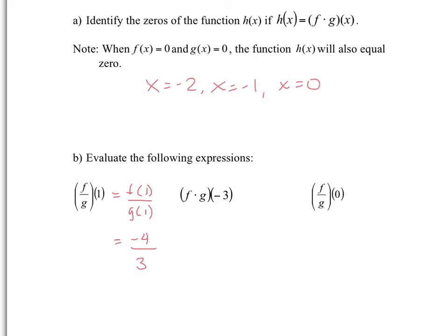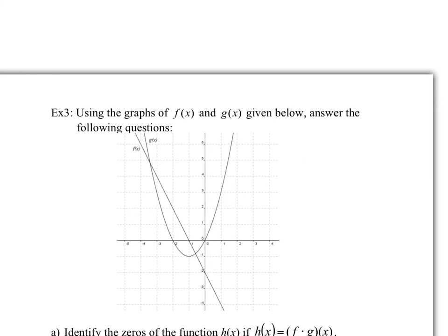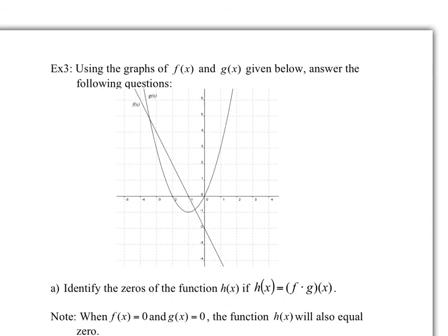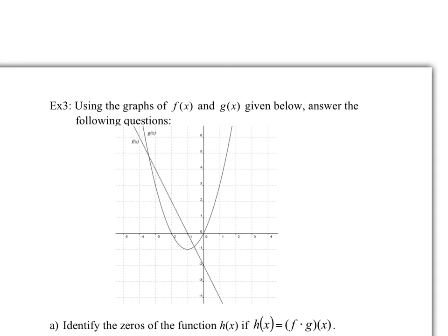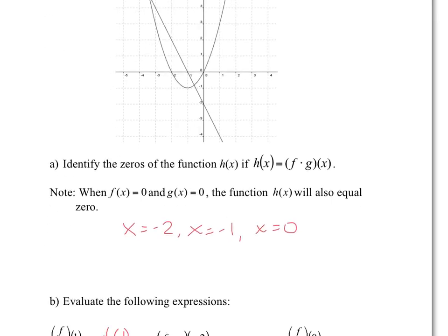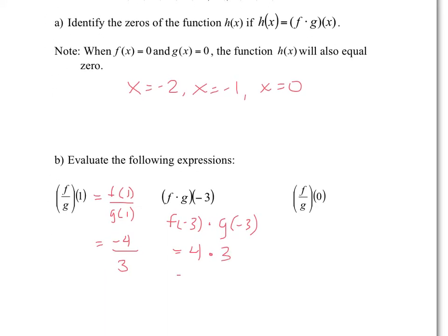All right, for the second one, f times g of negative three. So again, this would be another way of writing f of negative three times g of negative three. Okay, so this would be the same notation. So f of negative three, again I go back to my graph, negative three is over here, f is the linear, so y is equal to four. Okay, so you'd have y equals to four times g of negative three, and g of negative three is three. Right, that's the function right there. So you have three, go back, and therefore you have twelve.